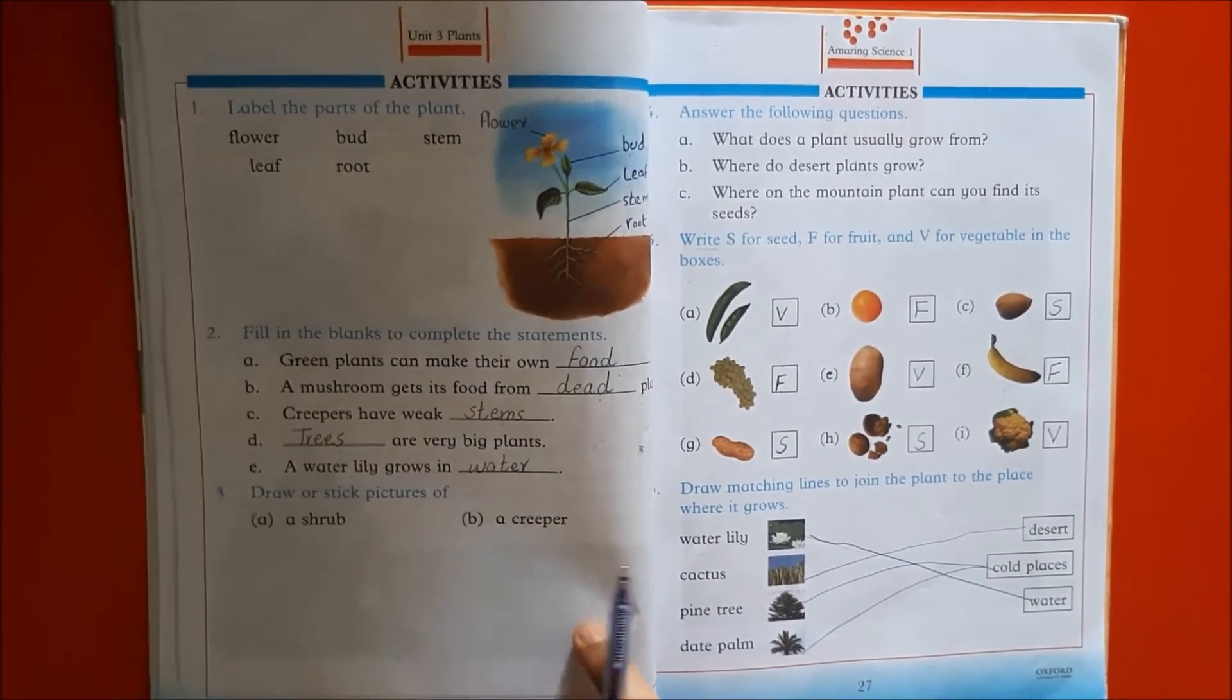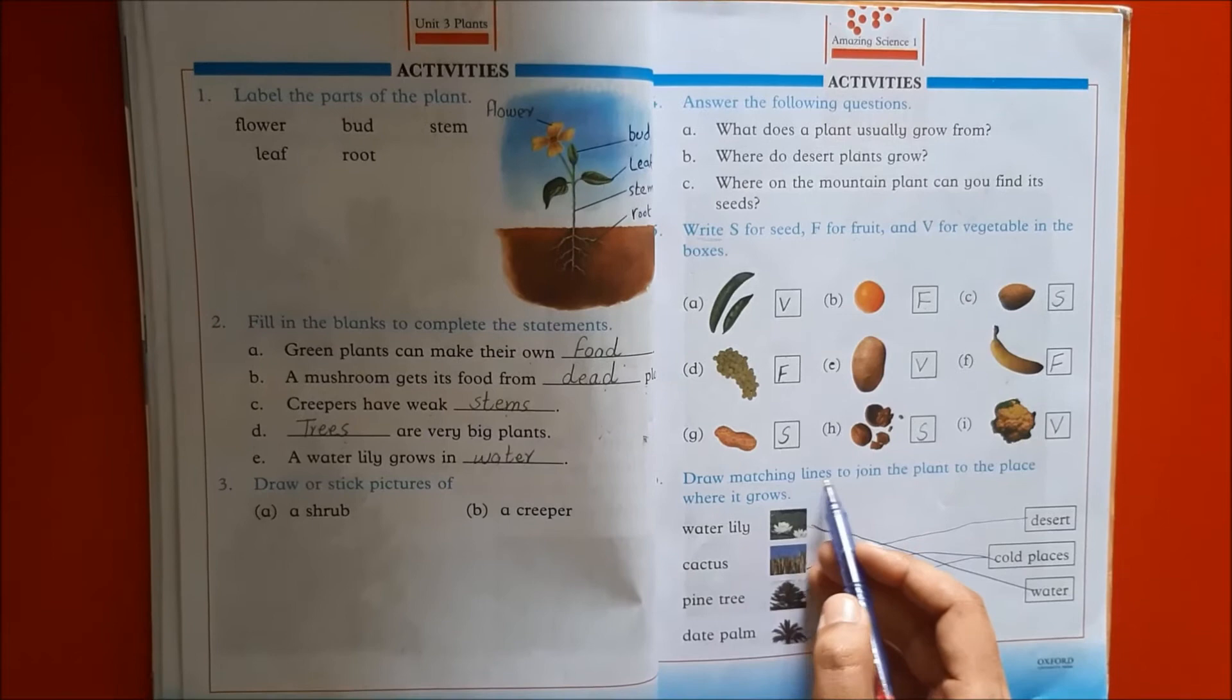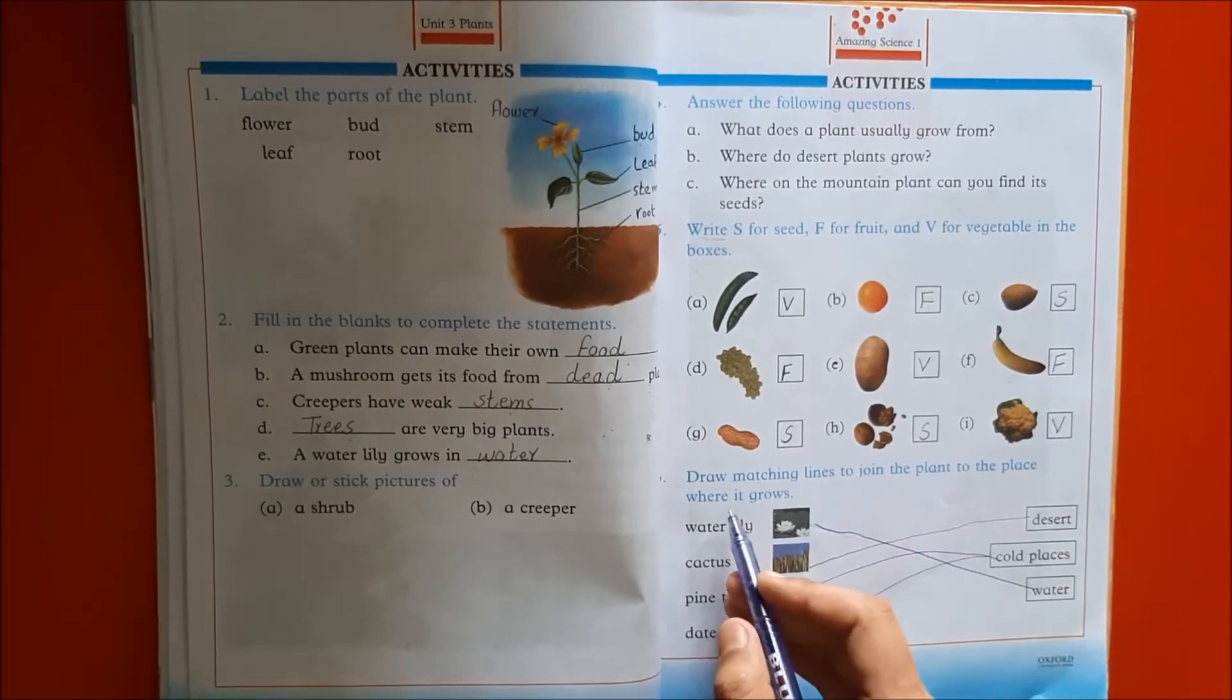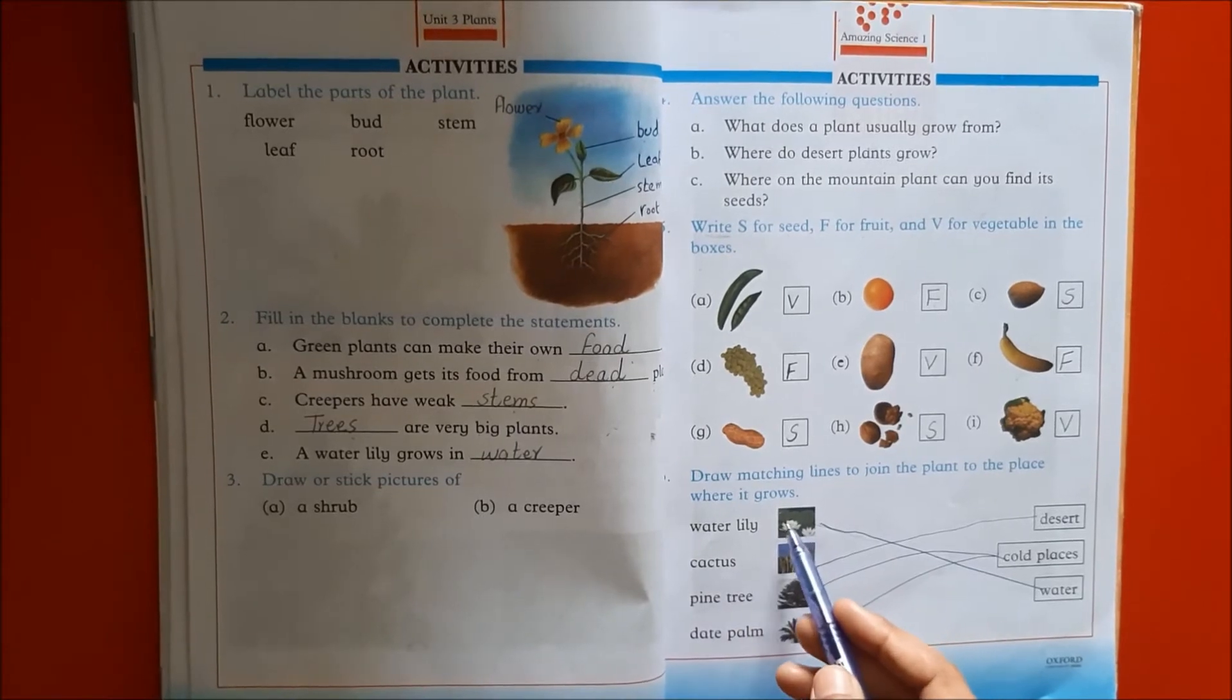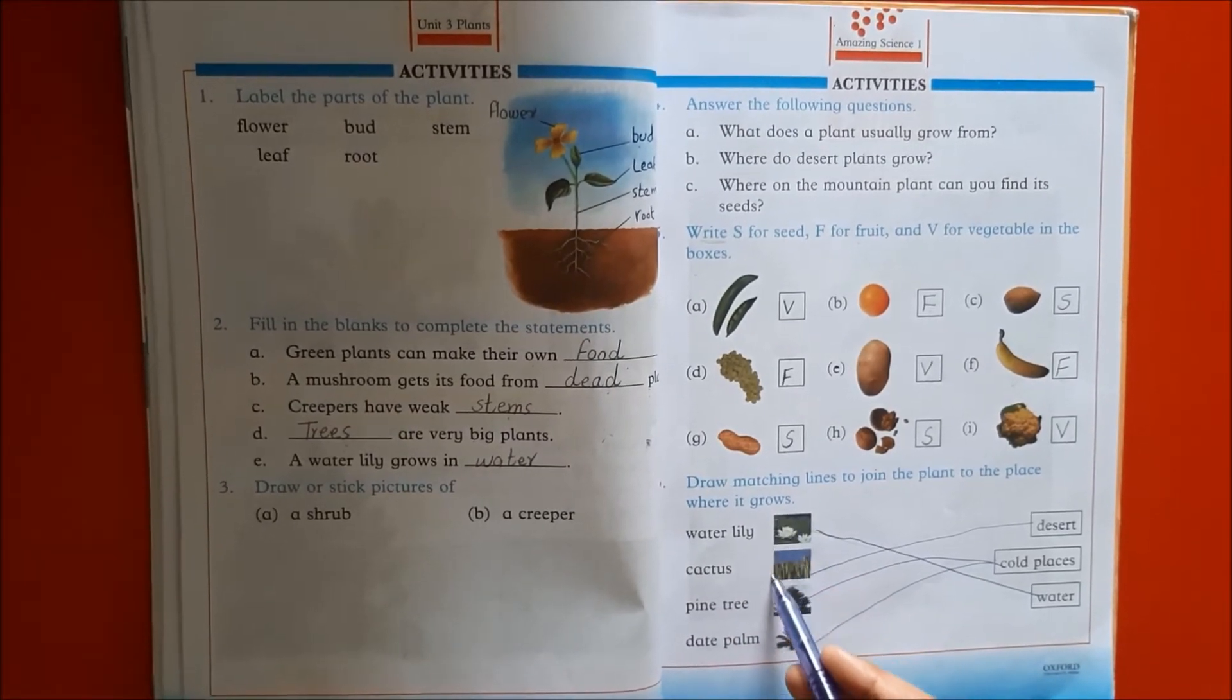Next question number 6, draw matching lines to join the plant to the place where it grows. Different plants are given.